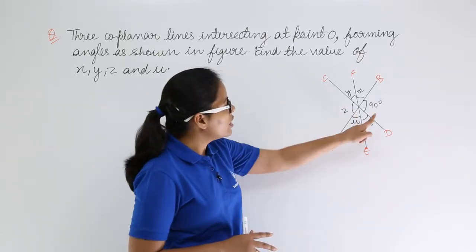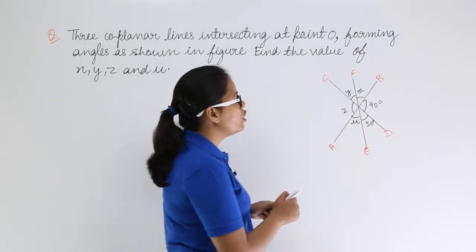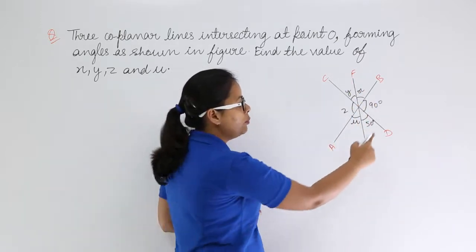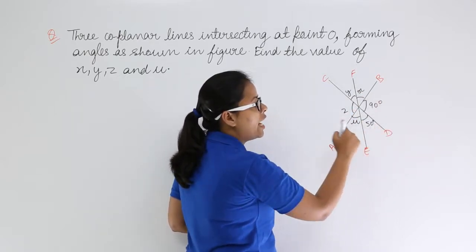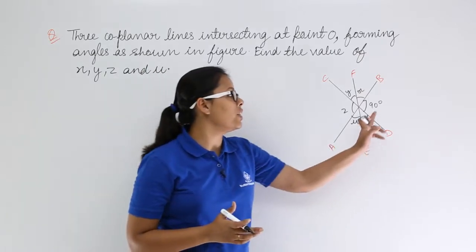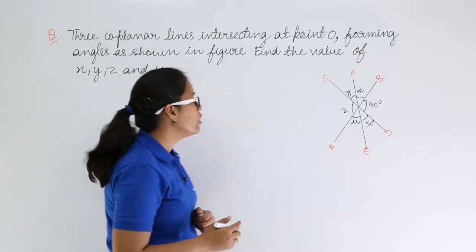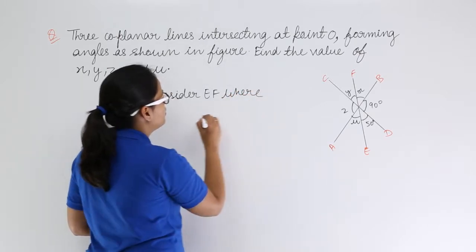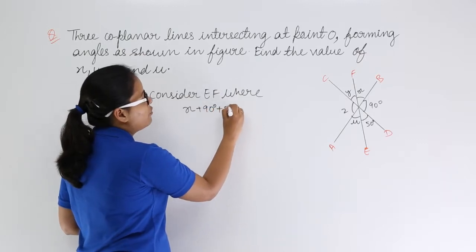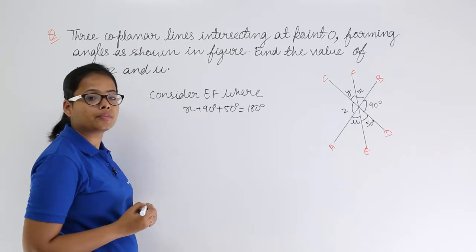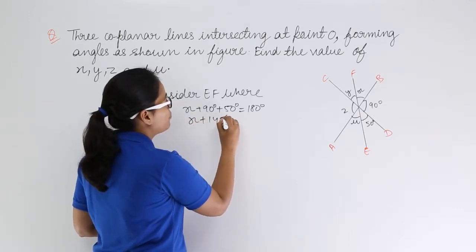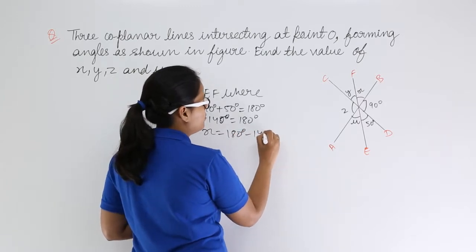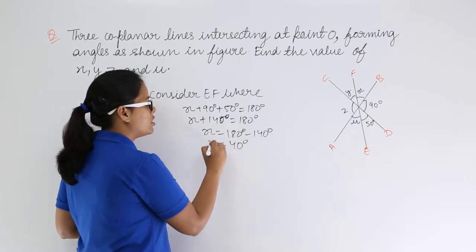Let's consider line EF first. On line EF there is only one unknown parameter, x, because x, 90, and 50 are the three angles subtended on line EF, and they must sum to 180 degrees. So: x + 90 + 50 = 180, which gives x + 140 = 180, therefore x = 180 − 140 = 40 degrees.